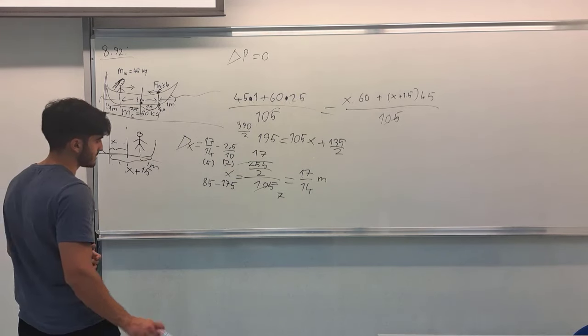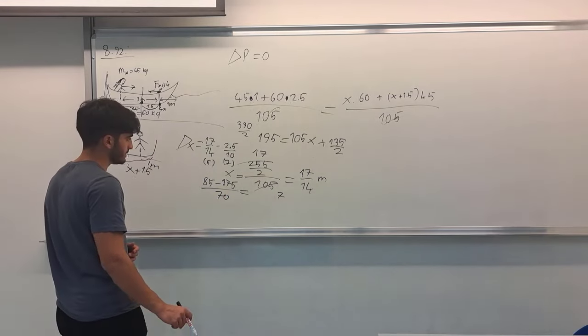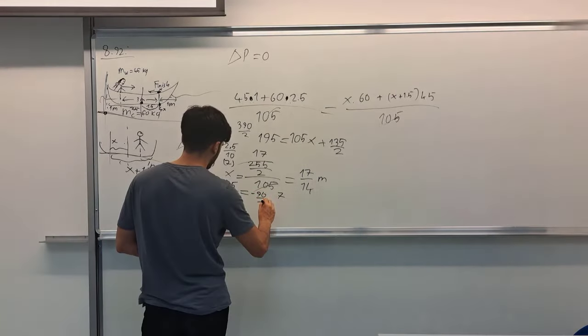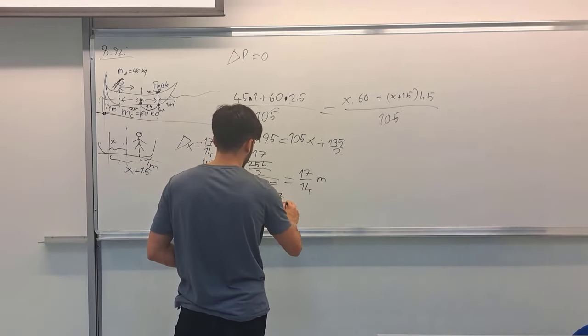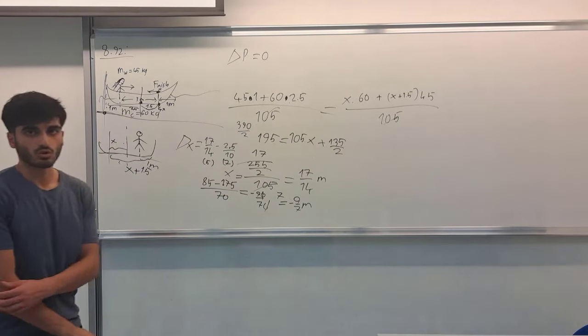Is this correct? Yes. Over 17. So the total displacement is minus 90 over 70 for this canoe.